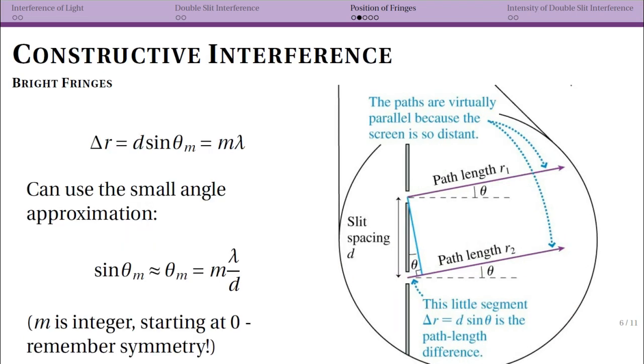To figure out what angles we get constructive and destructive interference for, we go back to our original idea that constructive interference occurs when you have a path length difference that is an integer number of wavelengths, where that integer m can start at zero. When we take this and say our path length difference is given by d sine theta, we can plug it into this and solve for sine theta to get m lambda over d.